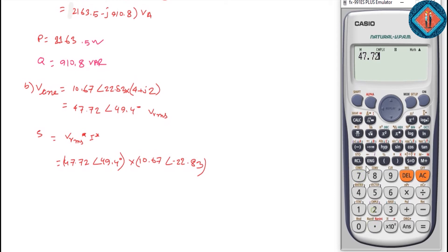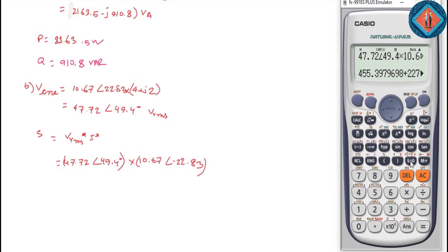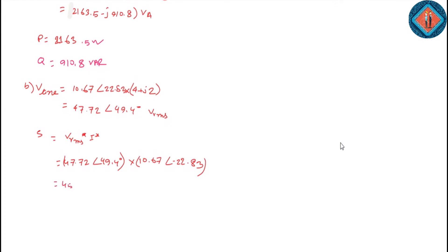At an angle 49.4 degrees — that's the voltage. With 22.83, the result is 455.4 plus j227.7 volt-ampere.